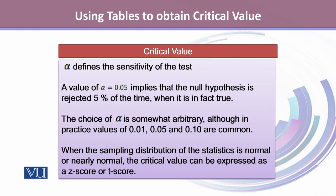The choice of alpha is somewhat arbitrary, although in practice values of 0.01, 0.05, or 0.10 are common. This is solely the choice of the researcher or practitioner that is conducting statistical inference.